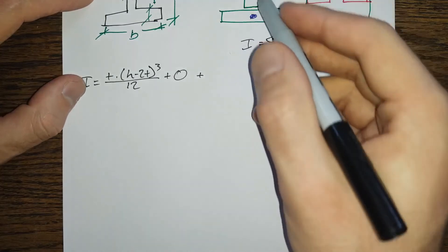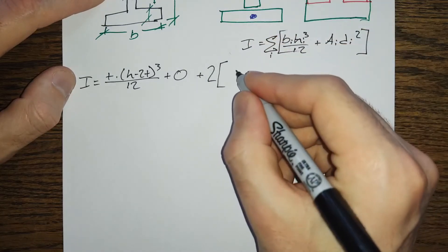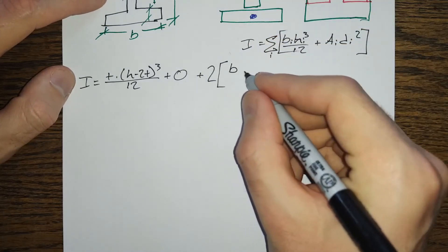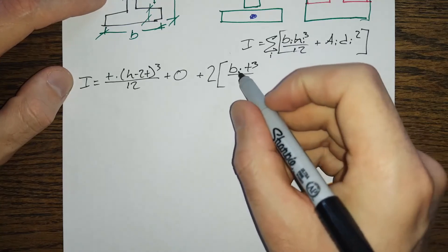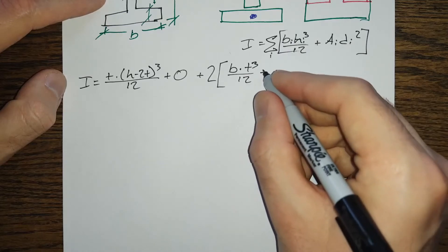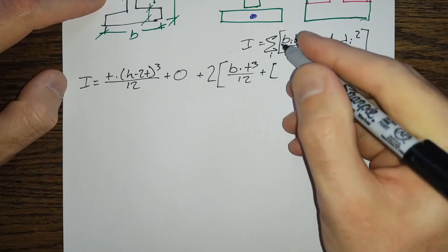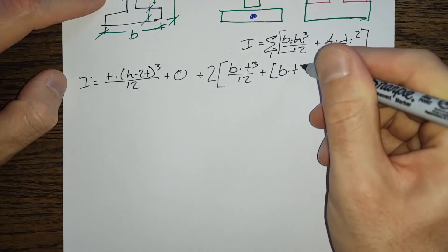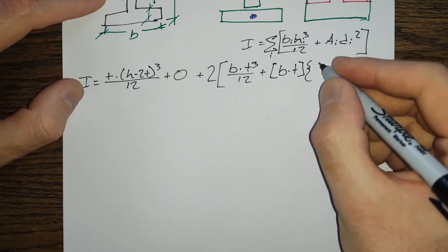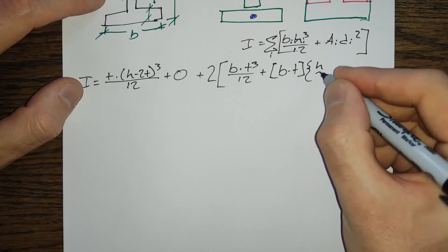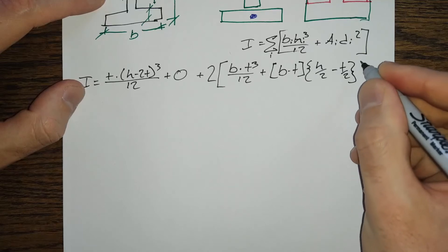Then because the top and bottom are the same thing, we're going to go times two. We're going to go, our width here is b, our height is t, so that's our bh cubed over 12, plus we need an area term which is going to be b times t. And we need our distance term which is going to be h over 2 minus t over 2, squared.